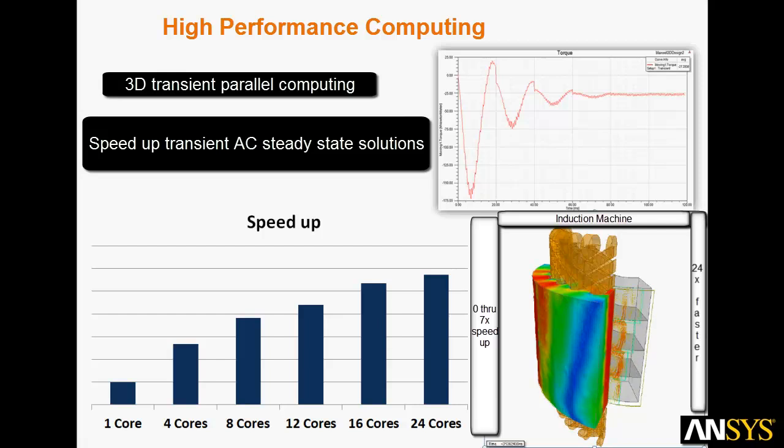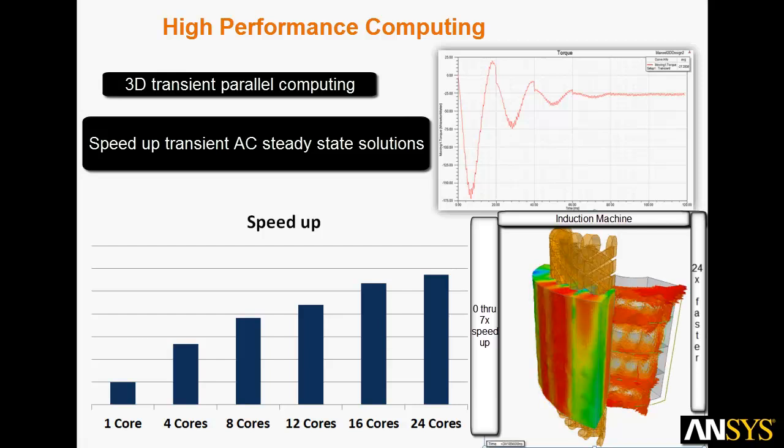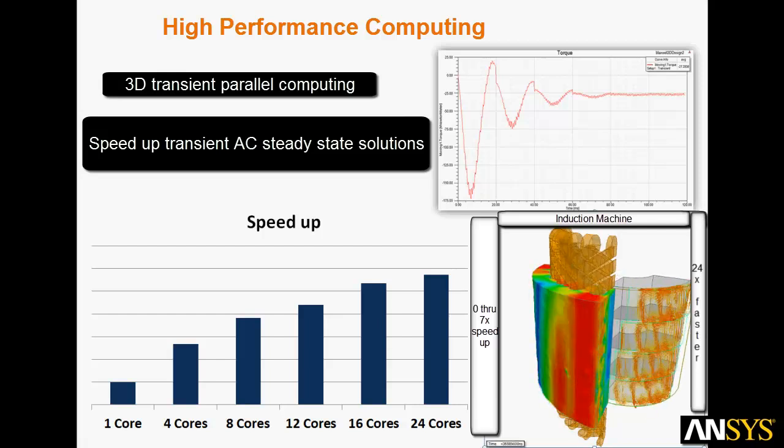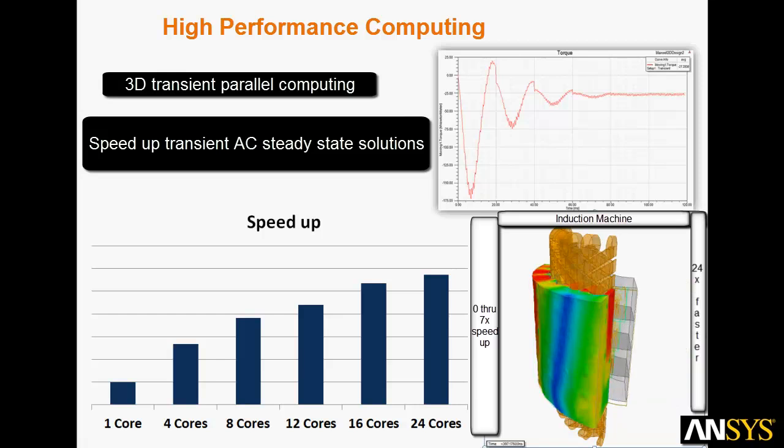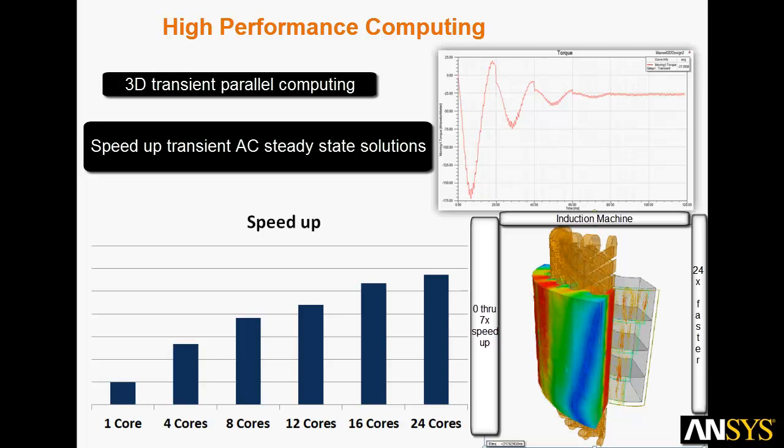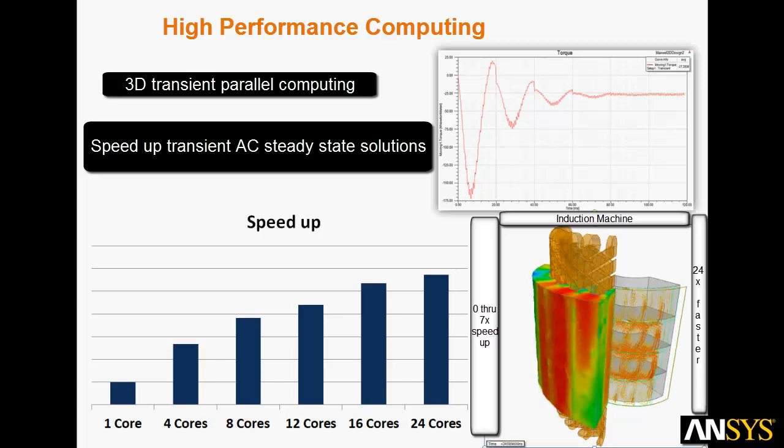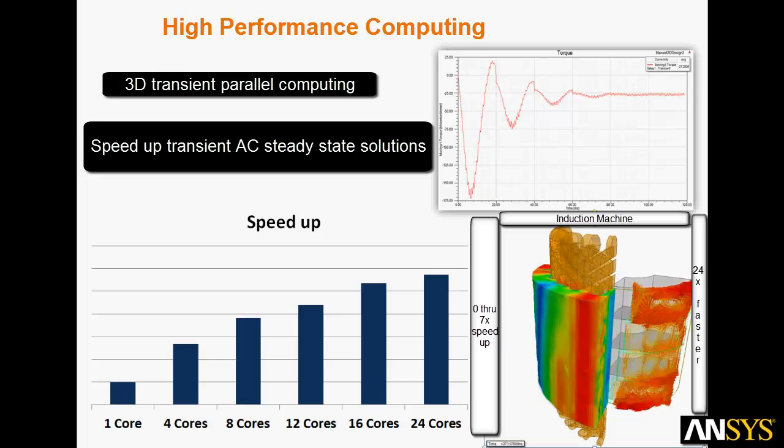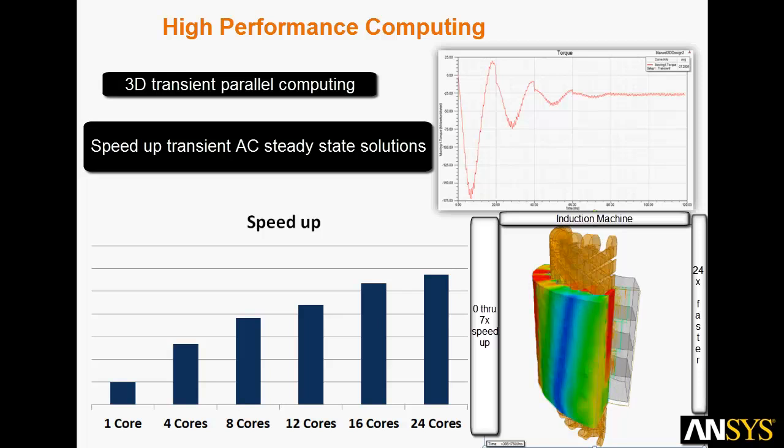High-performance computing speeds the solution of electric machines. ANSYS Maxwell can use parallel computing to speed 3D transient simulations. Here you see transient simulation of a large permanent magnet machine using parallel computing. The bar chart shows 5 to 6 times speed up and excellent scaling using multiple cores.